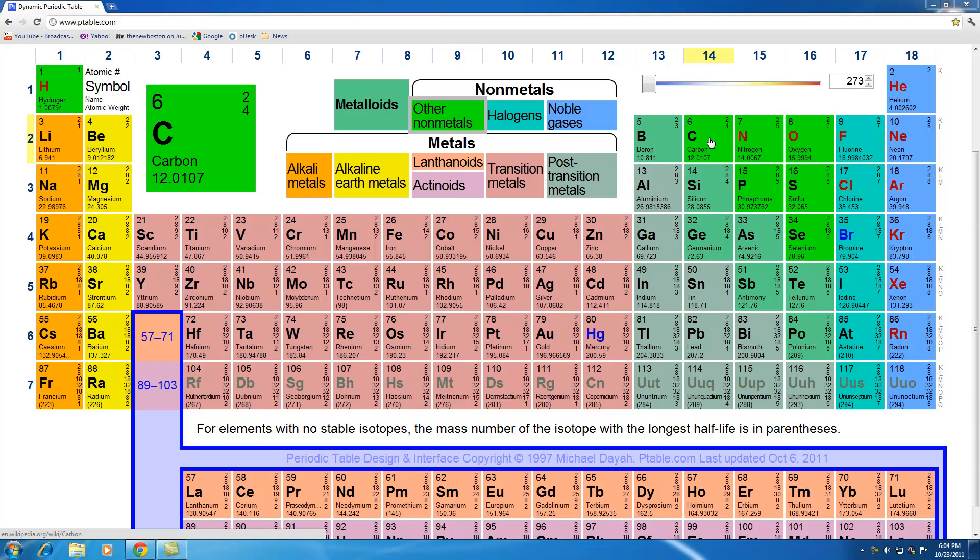The number in the top left is the atomic number, in other words how many protons are in that element. In carbon it's six, there's always six protons in carbon. Now under that is the symbol, the symbol is pretty much the lazy or the shorthand version that chemists write instead of the entire name.